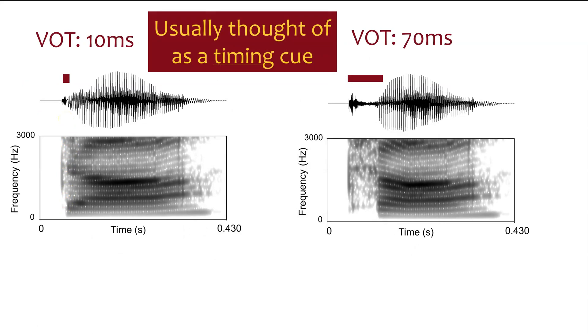So comparing side by side, we have the short voice onset time over on the left, 10 milliseconds—this would be like a b, d, or g. And over on the right, we have a long voice onset time of 70 milliseconds, like a p, t, or k. As you can see, we're measuring in the time domain, and we think of this usually as a timing cue.